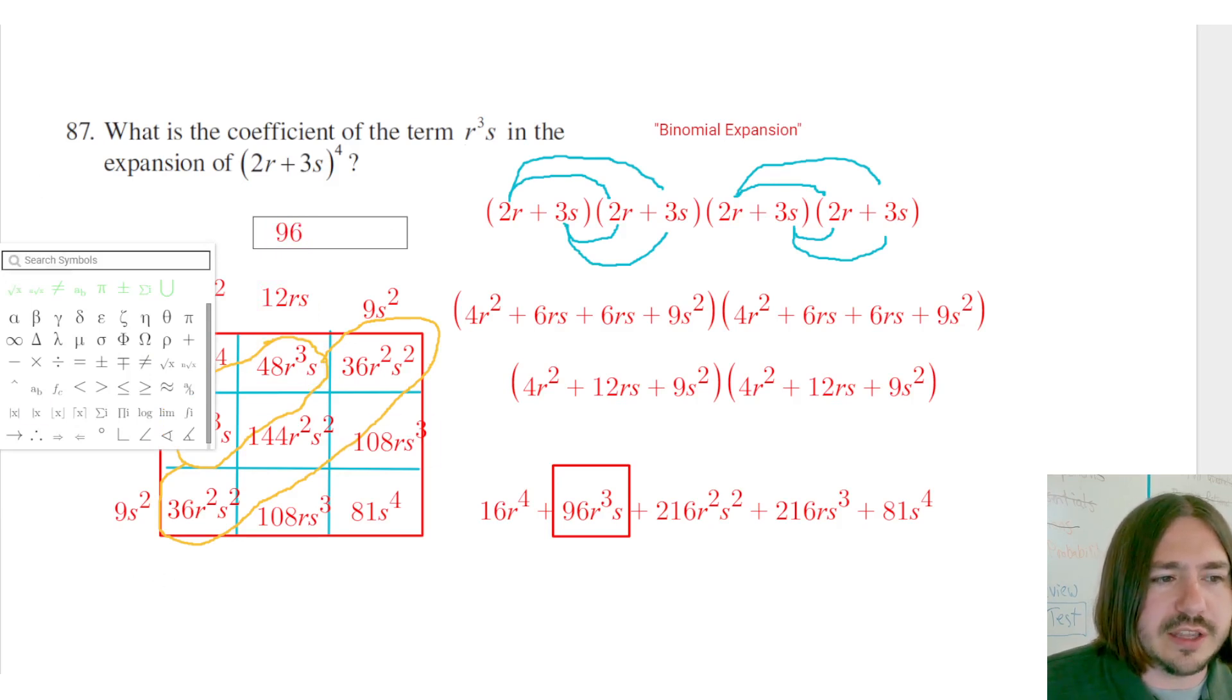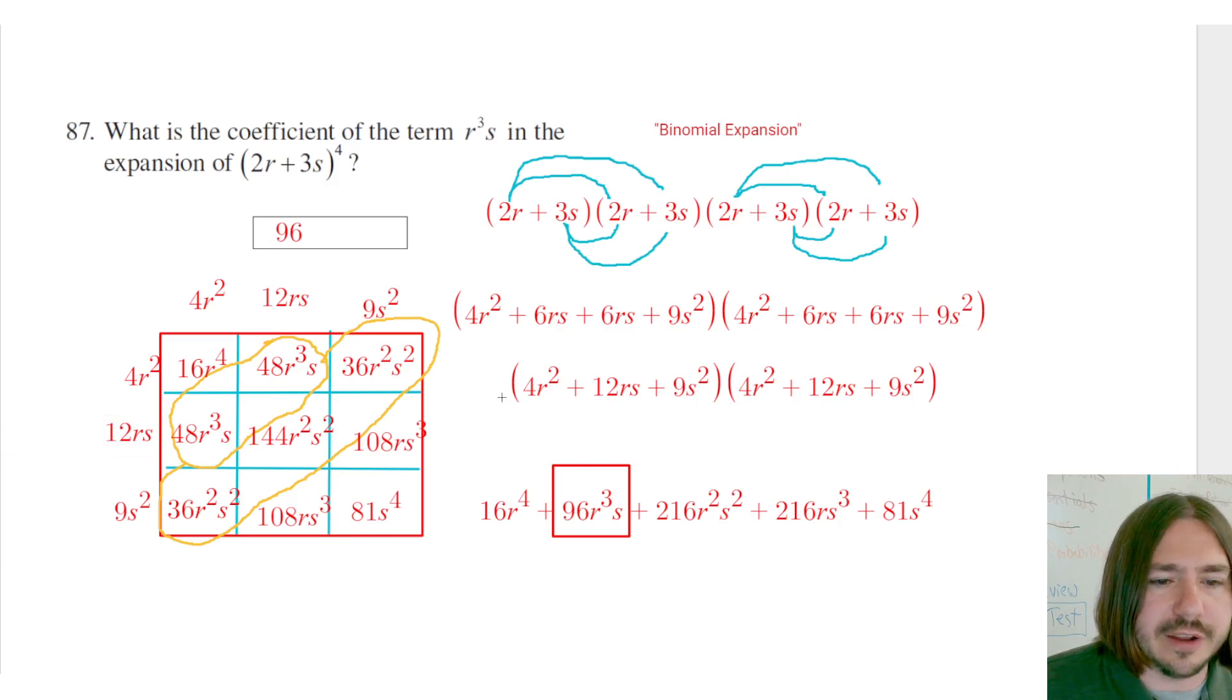Because once you see where your r cubed s's are coming from, you don't really need to simplify the rest of it unless it's asking for it. But this particular problem is only asking for these two terms. All right.